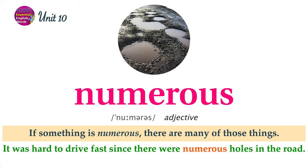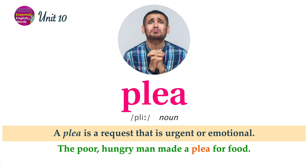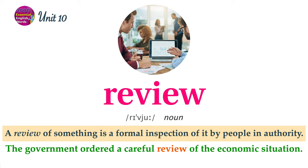If something is numerous, there are many of those things. It was hard to drive fast since there were numerous holes in the road. A particle is a very small piece of something. The bottles of wine were covered in a layer of dust particles. A plea is a request that is urgent or emotional. The poor hungry man made a plea for food. To refrain from something is to avoid doing it. The doctor asked Mary to refrain from eating fast food as part of her diet. A review of something is a formal inspection of it by people in authority. The government ordered a careful review of the economic situation.